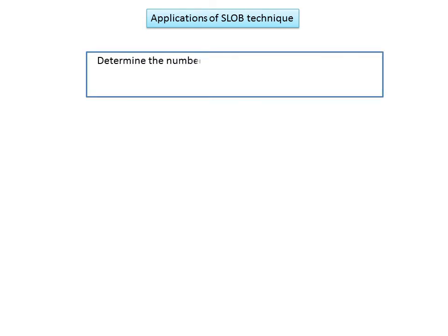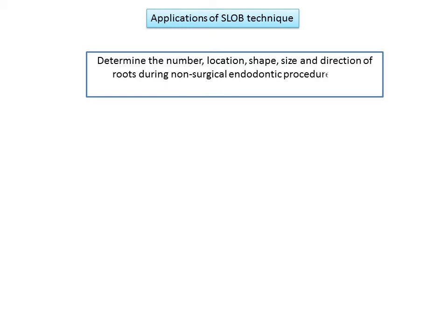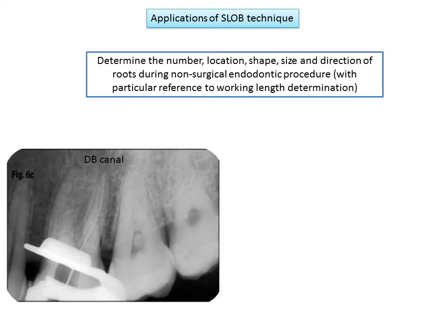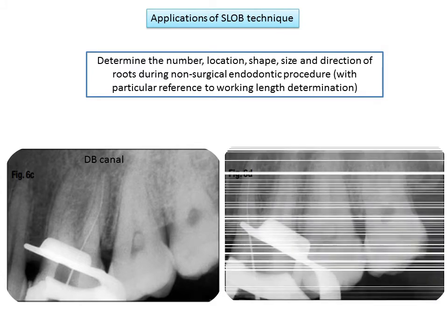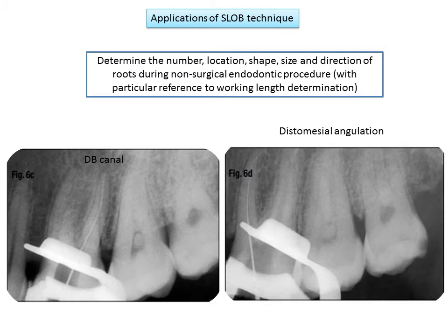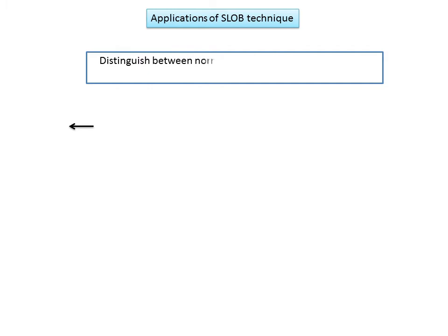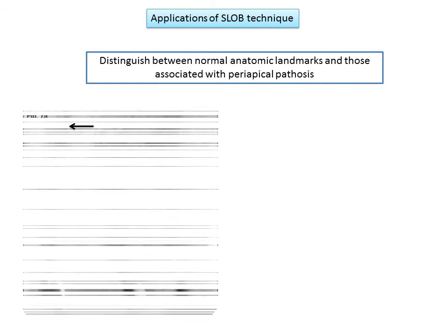The SLOB technique is also used to determine the number, locations, shape, size, and direction of roots during non-surgical endodontic procedures, with particular reference to working length determination. The working length of the distobuccal canal is checked, then the x-ray machine is angled distomesially, causing the palatal and distobuccal roots to appear superimposed while the mesiobuccal root is clearly discernible.